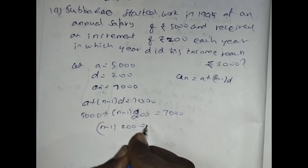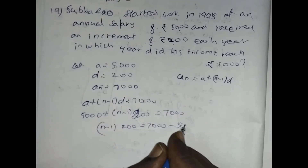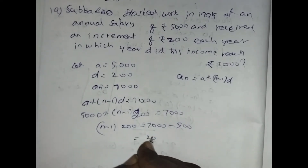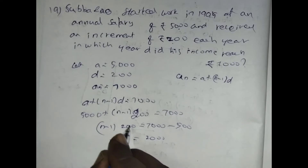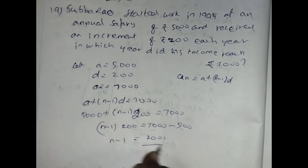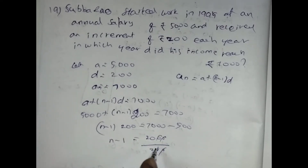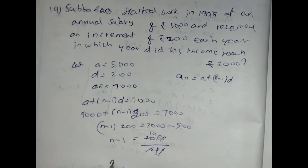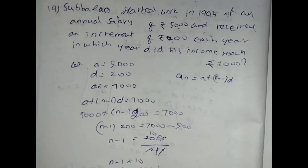So now N minus 1 into 200 equals 7000 minus 5000, which becomes 2000. Now we want to find N. So 200 goes to division: 2000 divided by 200 equals 10. So N minus 1 equals 10, therefore N equals 10 plus 1, which equals 11.